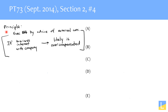Here's how I've broken down the principle. We're talking about a situation where an executive salary is determined by advice of an external consultant. If that consultant has a business interest with the company that the executive manages, then we can conclude that that executive is likely to be overcompensated — likely to be overpaid. So because we're looking for an answer choice that conforms to this principle, we want an answer choice where the premises tell us there's an executive whose compensation is determined by a consultant with a business interest with that company, and then the conclusion says that executive is likely to be overcompensated.